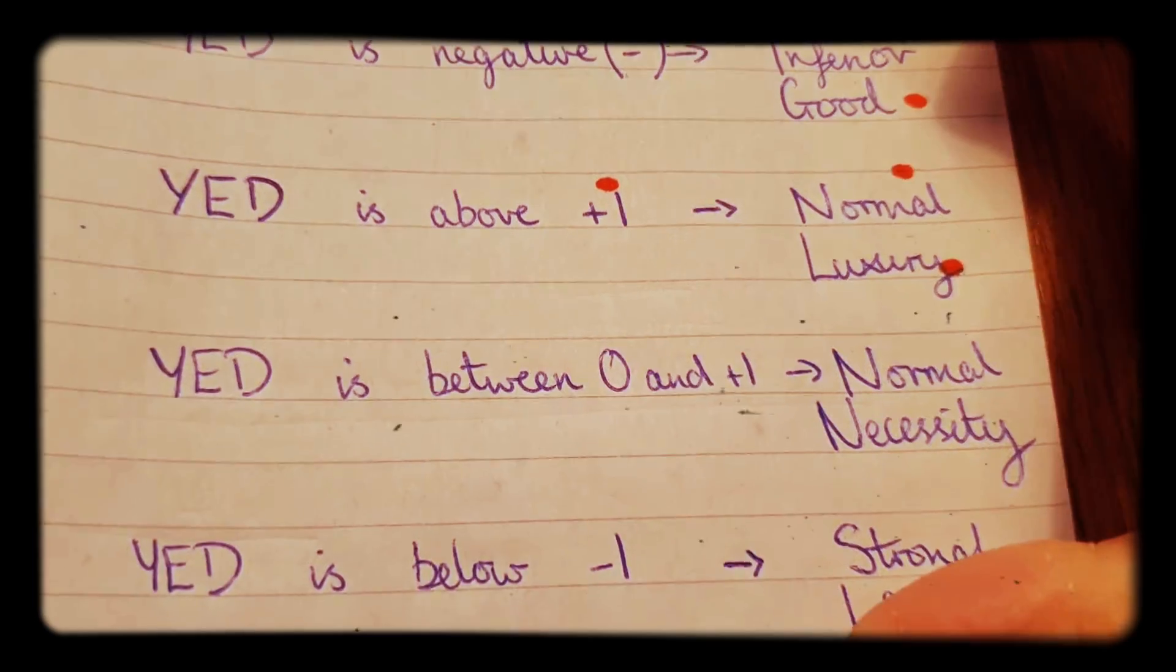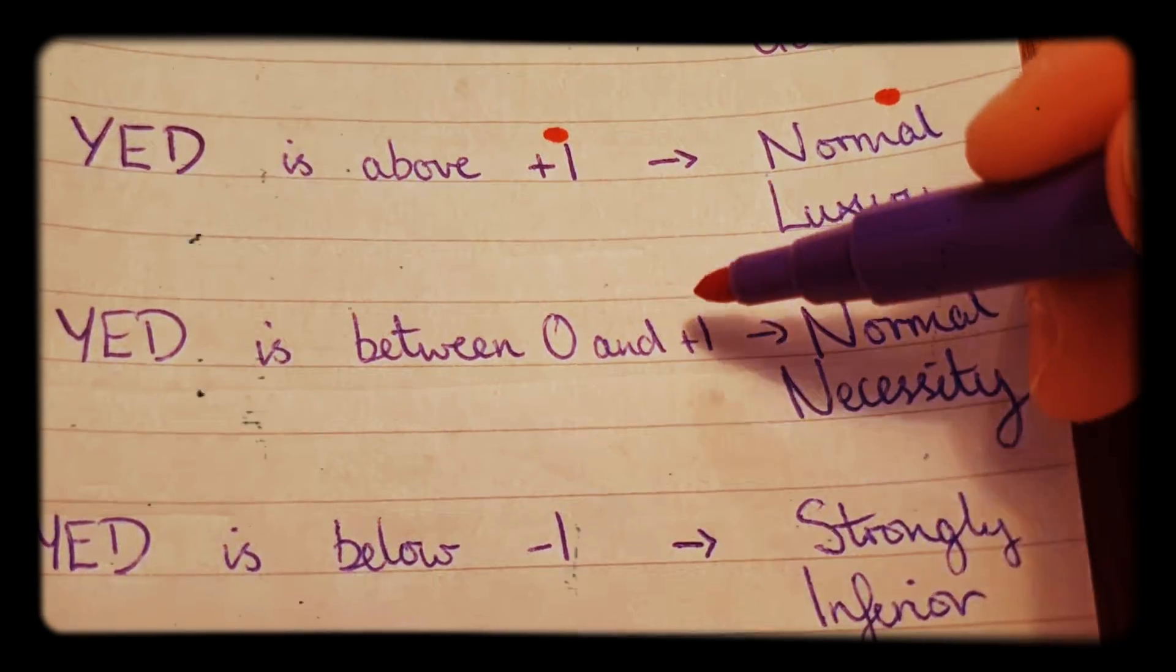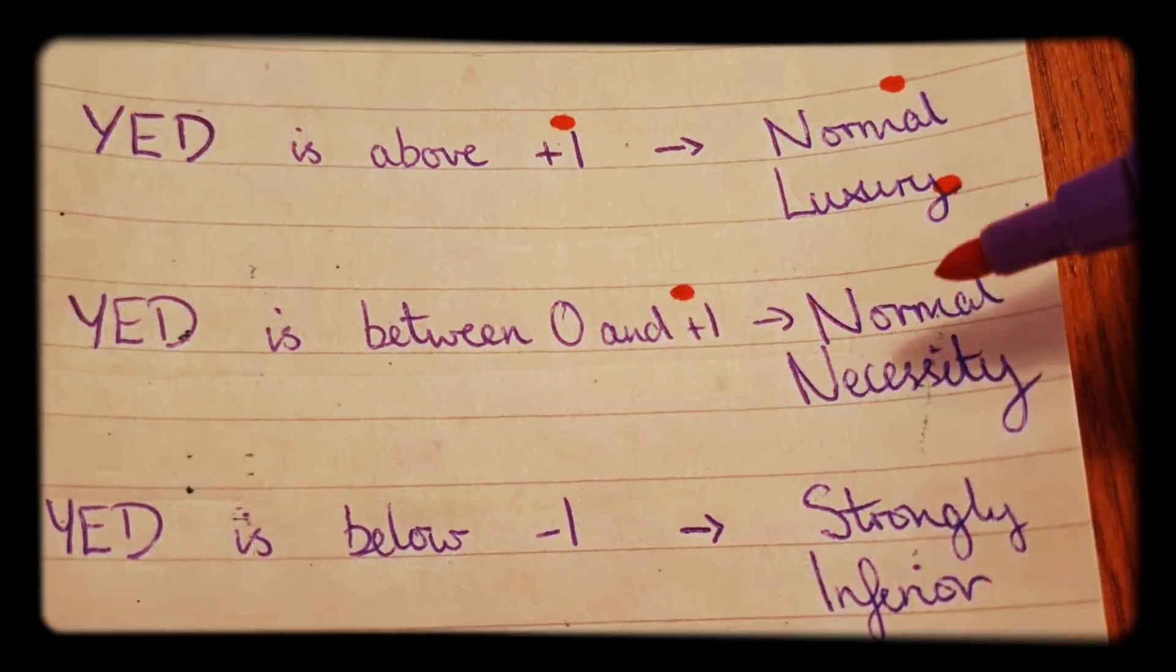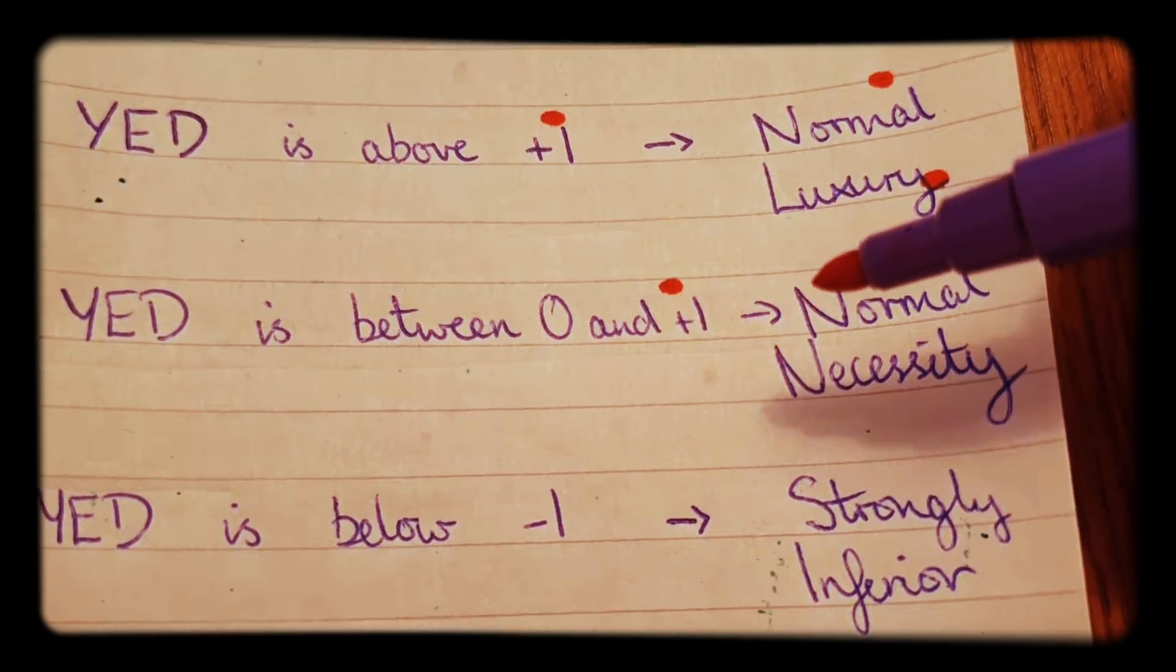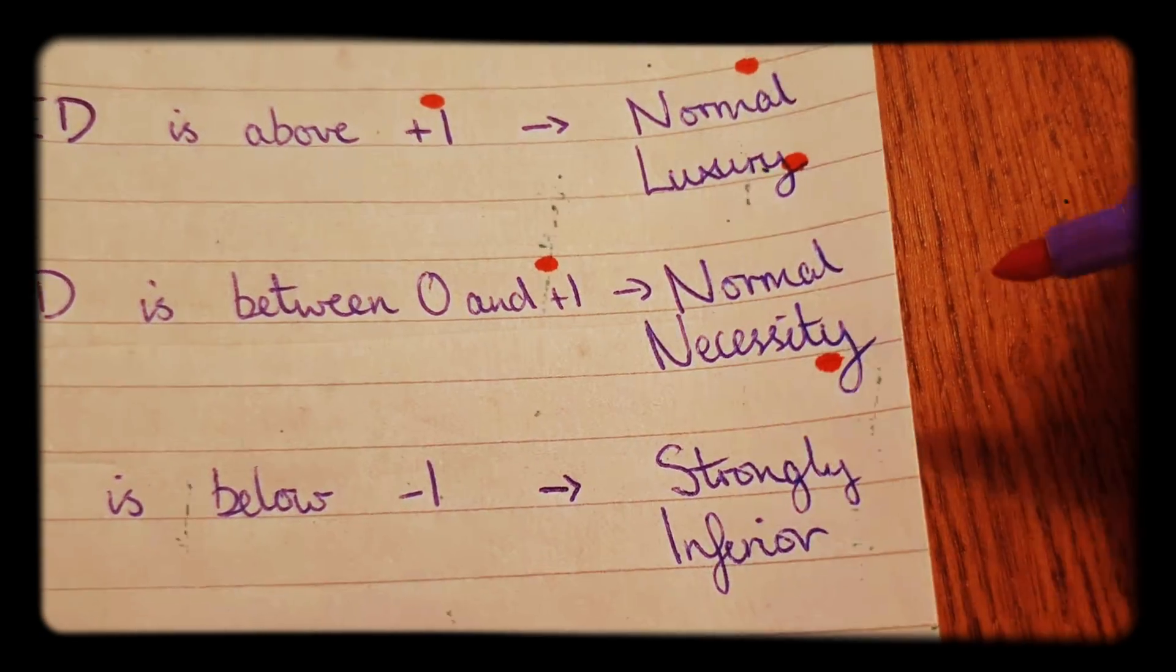If YED is between 0 and plus 1, then it's still a normal good, it's still positive. However, it becomes a normal necessity.